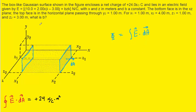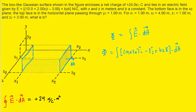To determine the electric flux for the right face, we integrate the dot product of the electric field and the dA vector. We are given a complex expression for the electric field, which we plug into our flux equation. The x value for this surface is x2, which equals 4 meters. So 2 times 4 is 8, added to 10 gives 18 — we replace 10 plus 2x with a value of 18.